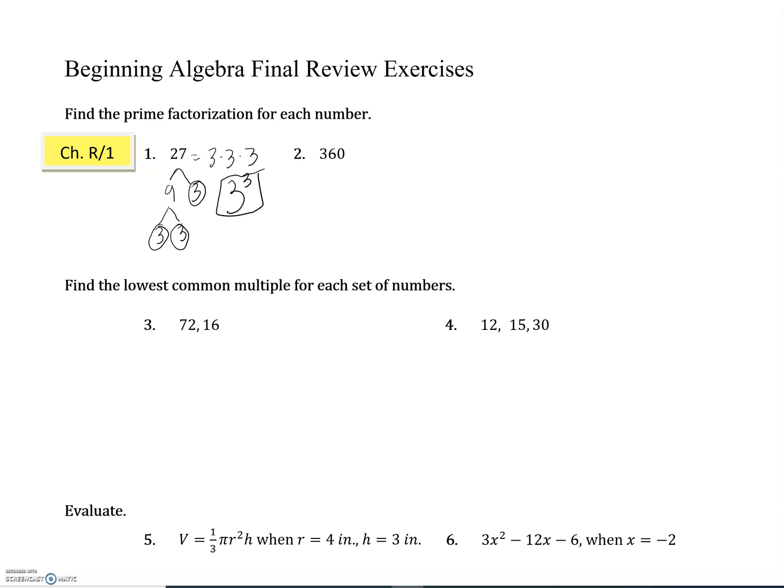Number two is a lot bigger number, so we're just going to start with any two numbers that multiply to be 360. Let's start with 10 and 36 and keep breaking those each down. 10 breaks down into 2 and 5. 2 and 5 are both prime numbers, so we know that we're done with 10.